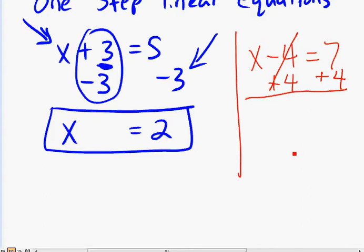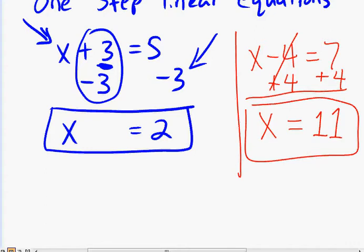So minus 4 and positive 4 add up to 0, so we just have x left. And on the right side, we have 7 plus 4, that's 11. And that's your answer, x equals 11.